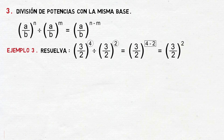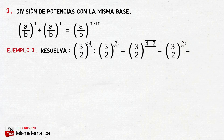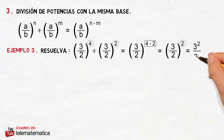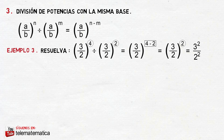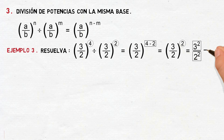Aplicando la propiedad de potencia de un número racional, esto va a ser igual a elevar al cuadrado el numerador y elevar al cuadrado el denominador. Luego, resolviendo las potencias, esto nos quedaría 9 cuartos.